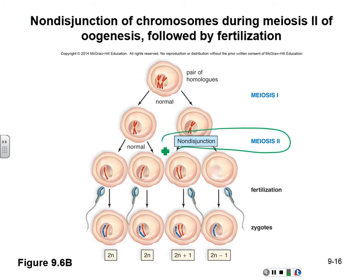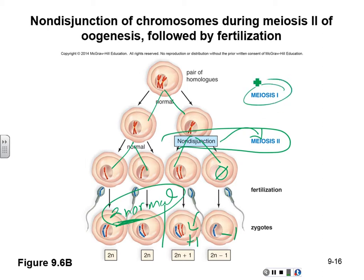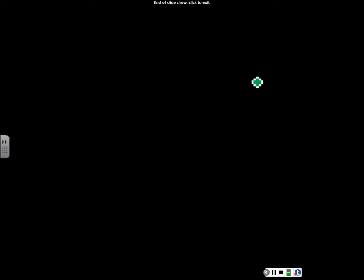A non-disjunction event can also occur in meiosis 2. The first division happened fine, but the second division had a problem — one egg did not receive any chromosomes. So we have two that are normal, one with an extra chromosome, and one without enough chromosomes. A non-disjunction event in meiosis 2 is a little bit better because at least your odds are 50-50, whereas a non-disjunction event in meiosis 1 means all four cells were non-functional. Alright, I'll see you for the next chapter.